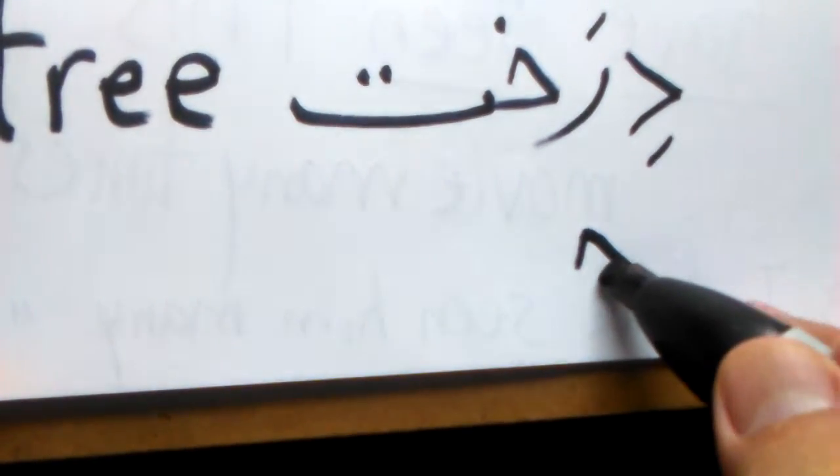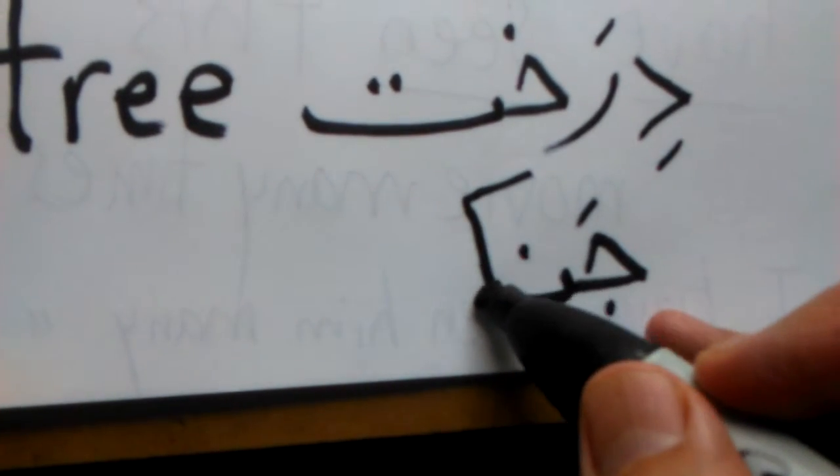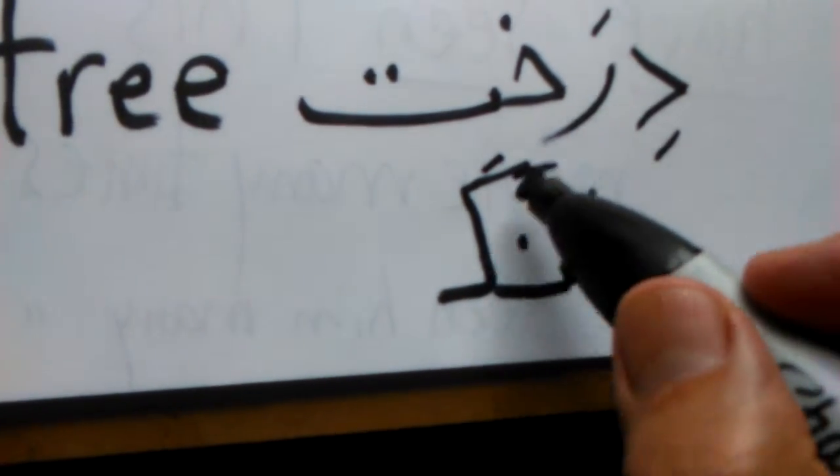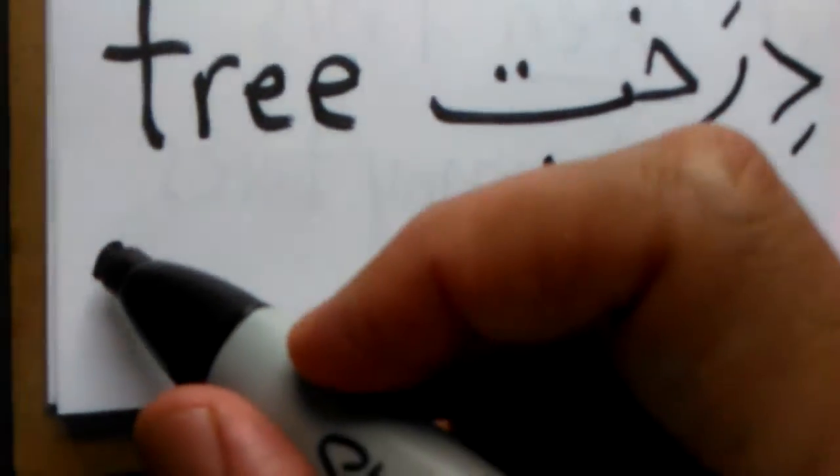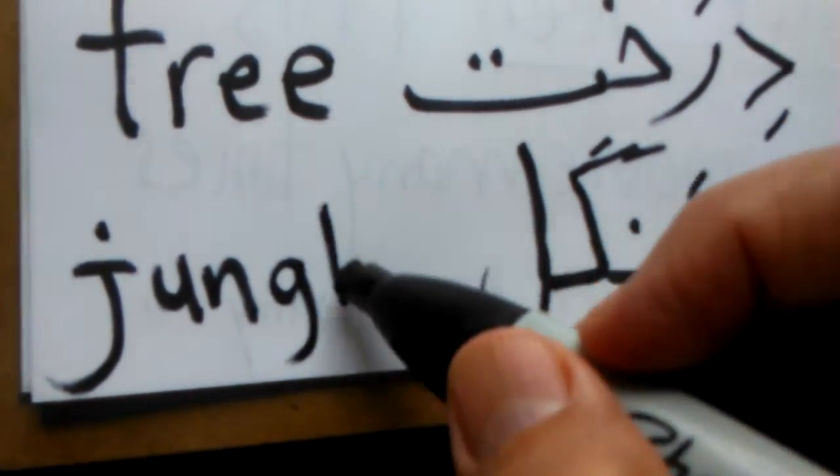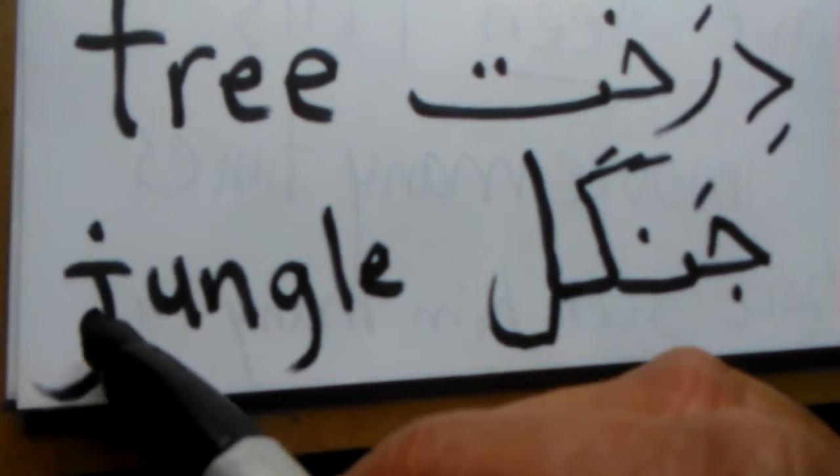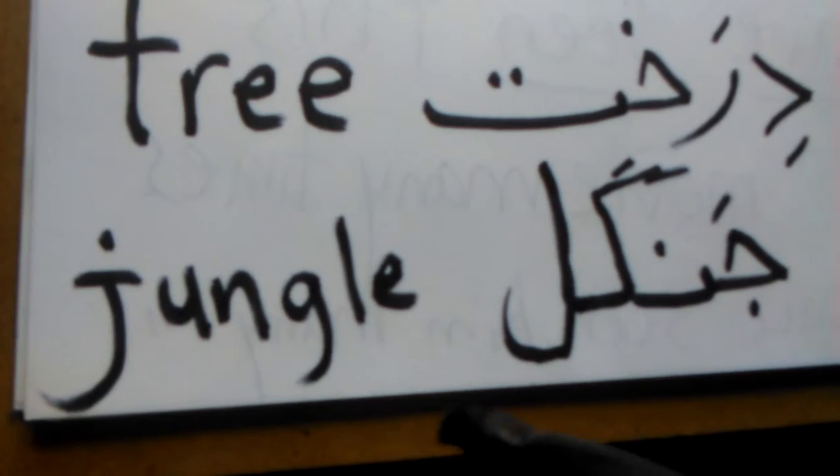جنگل. This is a G. جنگل, which means jungle. Jungle. جنگل. J-U-N-G-L-E. Jungle.